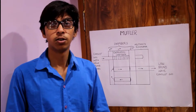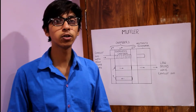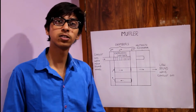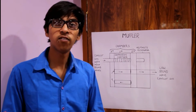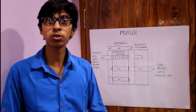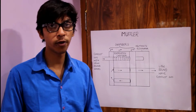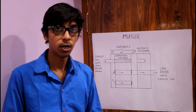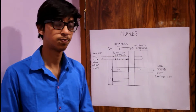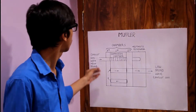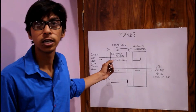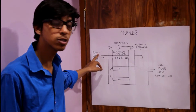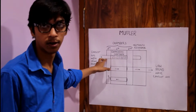Hello everyone. Today we are going to discuss the muffler of an exhaust system. The muffler is used to cancel out the sound waves produced inside an engine during the combustion process. In order to reduce the sound waves, we send the exhaust gases to the muffler.